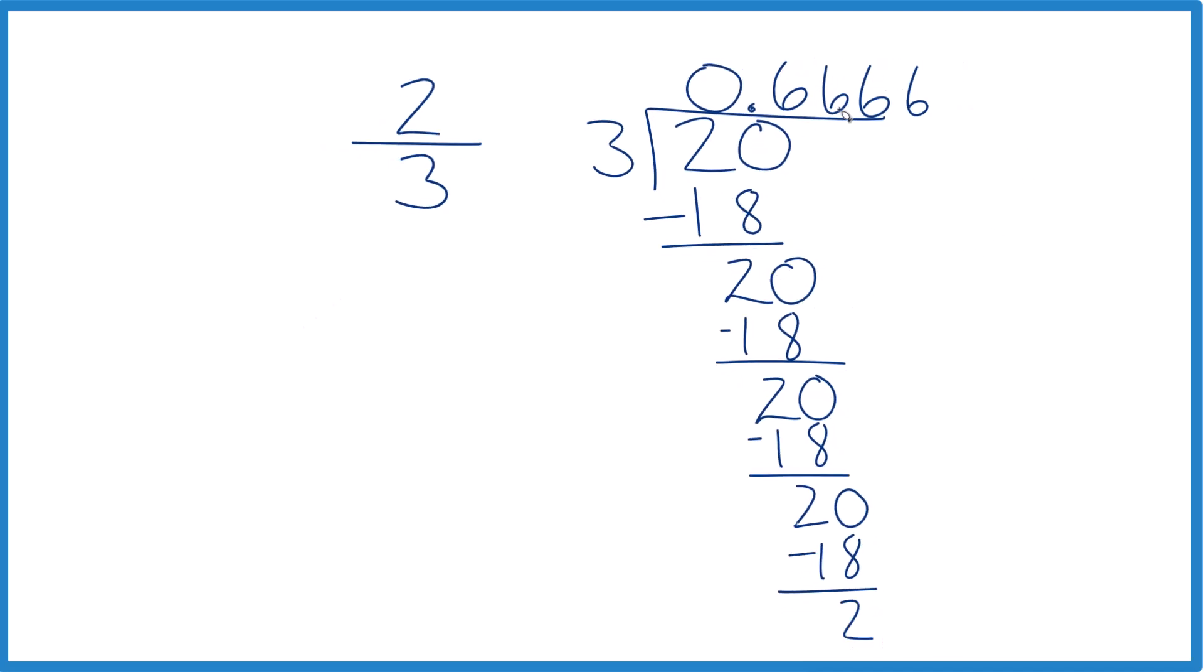So let's round this to the thousands place. So that's one, two, three places after the decimal. So we have six, so we're going to round this up. So we're going to call this seven. And rounding two-thirds, the fraction, to a decimal, we get 0.667.